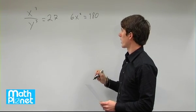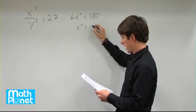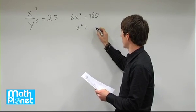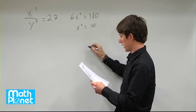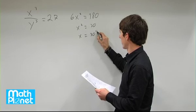So let's just solve for x here. We'll divide both sides by 6 and we get 180 divided by 6 is 30. And then we can take the square root of that. So we have x equals 30 to the power one half.